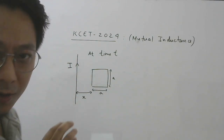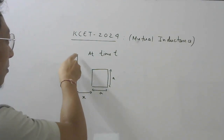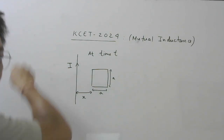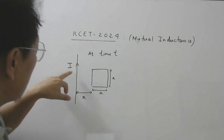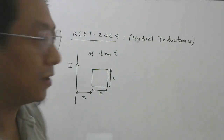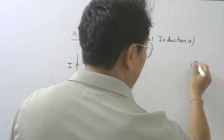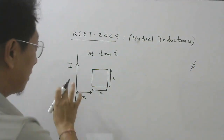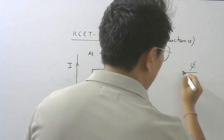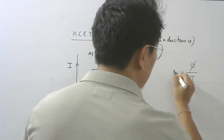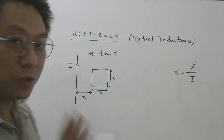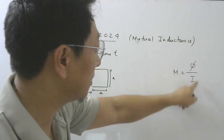We pass current in one coil. This wire is also a coil because it goes to plus infinity and minus infinity — it is a closed loop. So we pass current in one coil and calculate flux through the other coil. If this is the flux linked with the square loop and the current in the first coil is I, then dividing these two gives the mutual inductance between the two coils. Our job is to find the magnetic flux in terms of current.